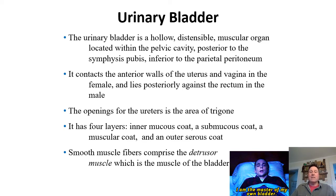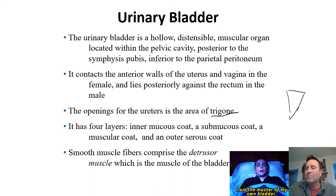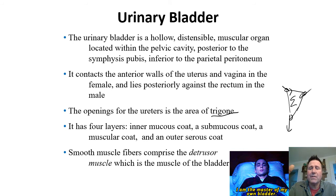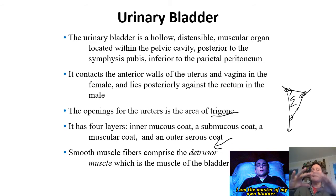It differs between males and females — females have an additional apparatus between the bladder and the large intestine. The bladder has a trigone — a triangle made up of the two ureters coming in and the urethra leaving. It's a smooth area that stays constant in your bladder. The layers are: a mucosa with transitional epithelium, a submucosa, then the smooth muscle. The muscle in your bladder that causes you to pee is the detrusor muscle — going every which direction on this sphere, contracting to push the urine out.